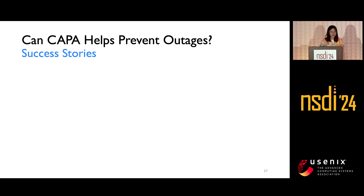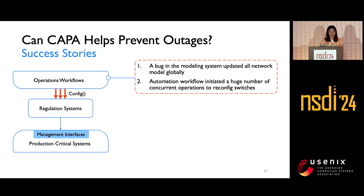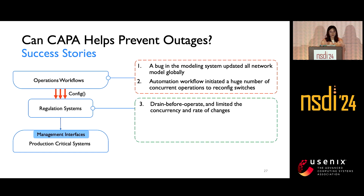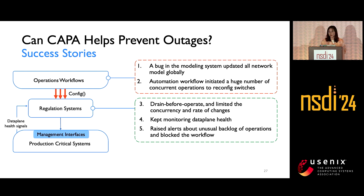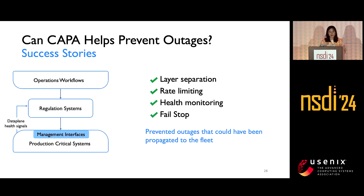In one success story, a bug in the modeling system tried to update all network models globally. An automation workflow initiated a huge number of concurrent operations to reconfigure switches by calling the interface exposed by the regulation system. KAPPA helped by enforcing draining before operations, limiting concurrency of changes, and continuously monitoring data plane health. It found an abnormal backlog of operations, raised an alert to operators, and eventually blocked the workflows — demonstrating how layer separation, rate limiting, health monitoring, and failstatic together prevented outages from propagating to the entire fleet.